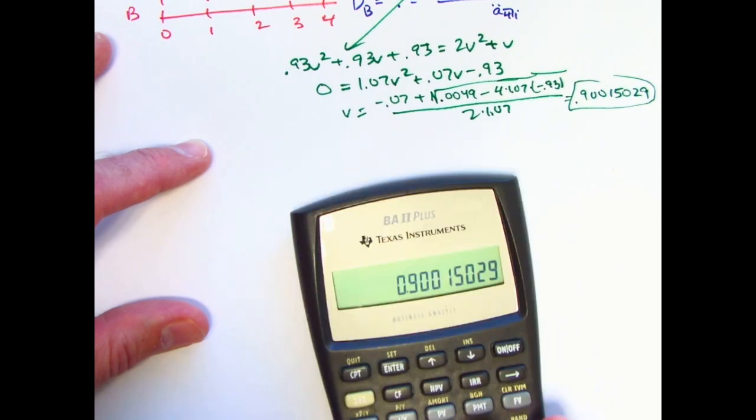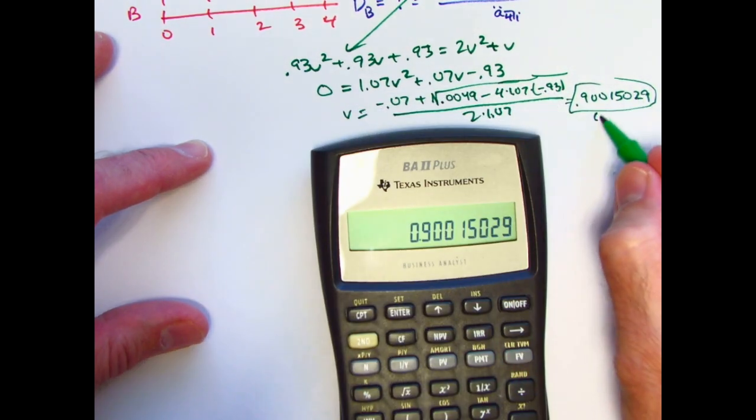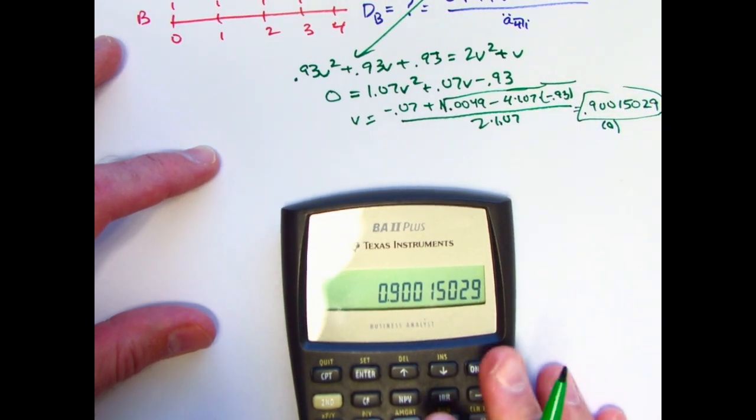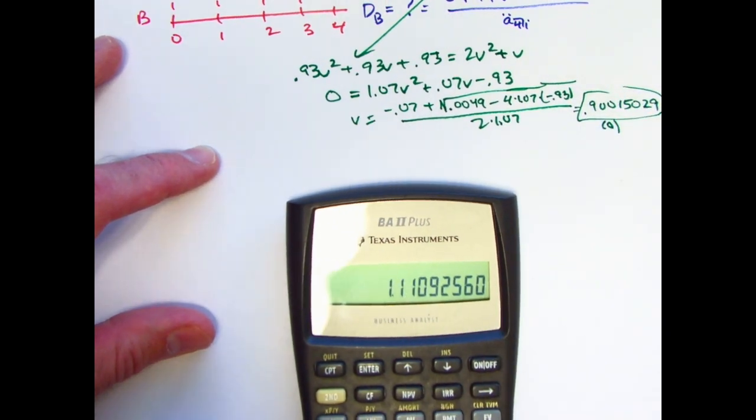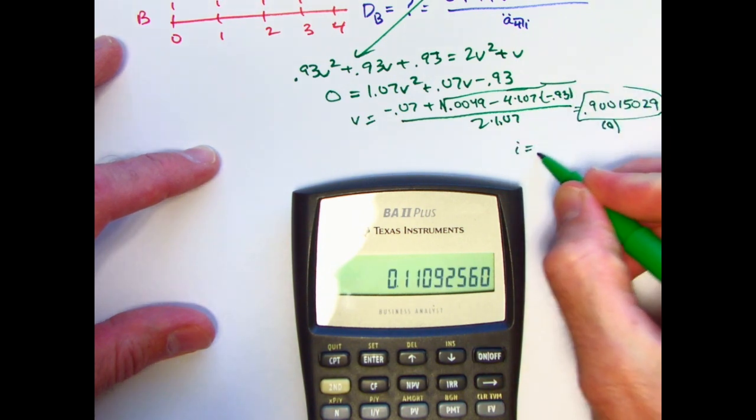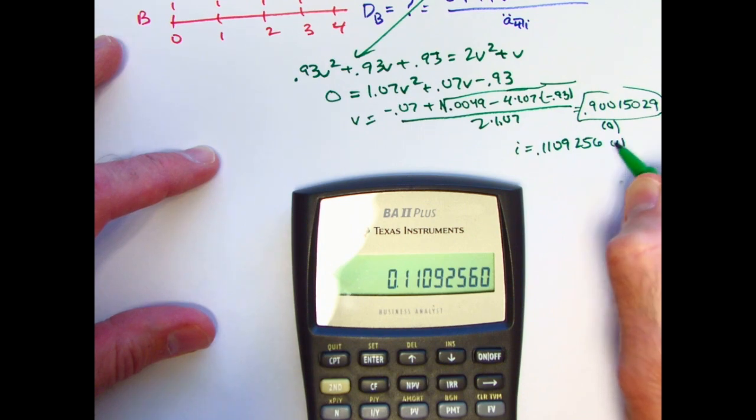That is v. It's not the final answer, even though I circled it there. Let's store that in register 0. Probably it's going to be helpful to find i as well. So I need to take 1 over v, and then subtract 1 from that. i looks to be 0.1109256. I'll store that in register 1.